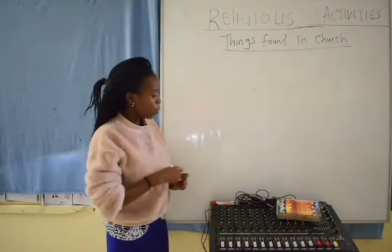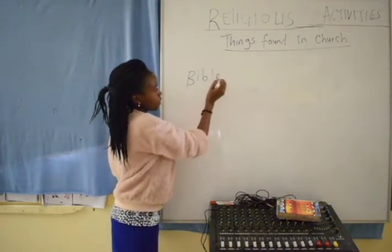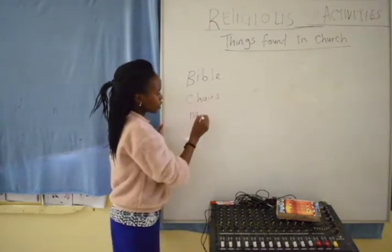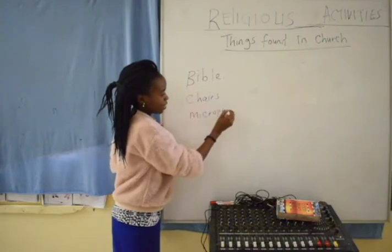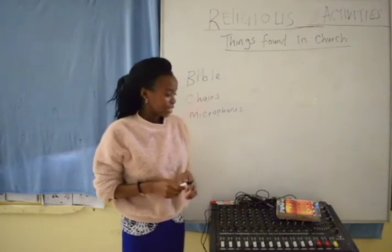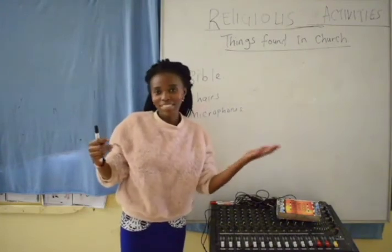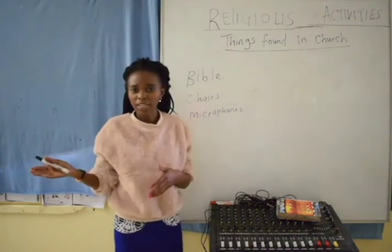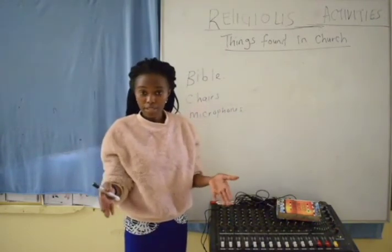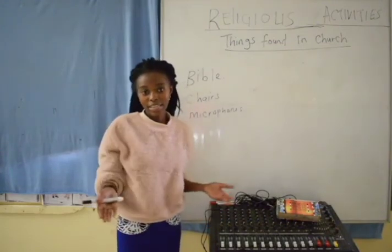So today we have seen: the Bible, found in the church. We have chairs, found in the church. We have microphones, all found in the church. What else is found in the church? We find happiness in the church. When you are stressed, maybe when you want to pray, or when your mom and dad have a problem, you go to church and pray. You will find happiness there, and you will get healed. Okay?